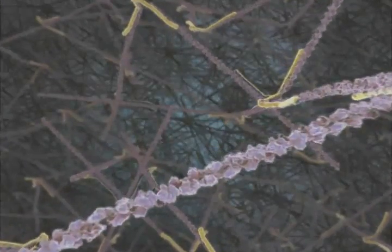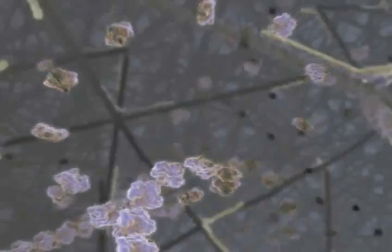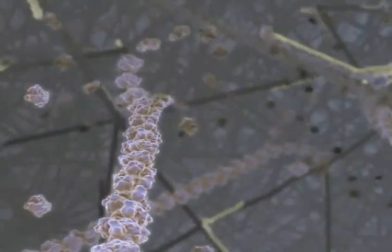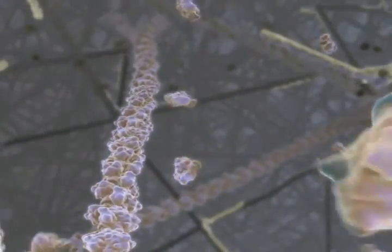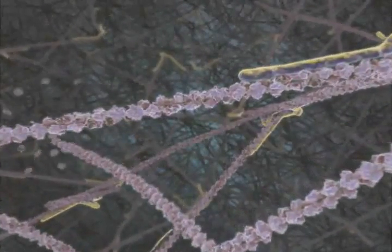Filaments, capped at their minus ends by a protein complex, grow away from the plasma membrane by the addition of actin monomers to their plus end. The actin network is a very dynamic structure, with continuous directional polymerization and disassembly.